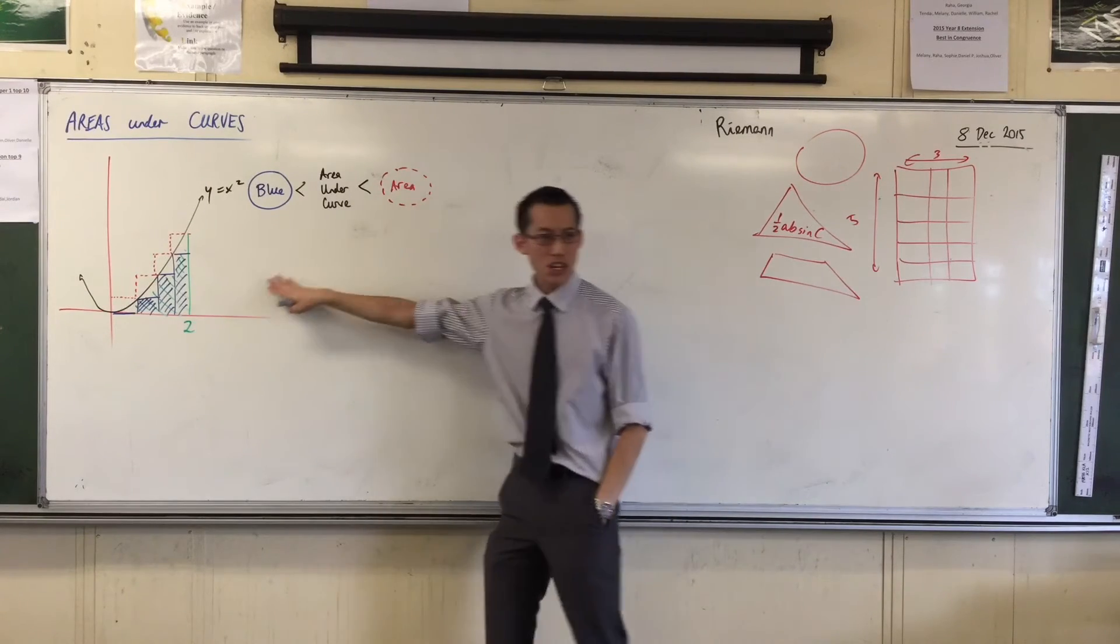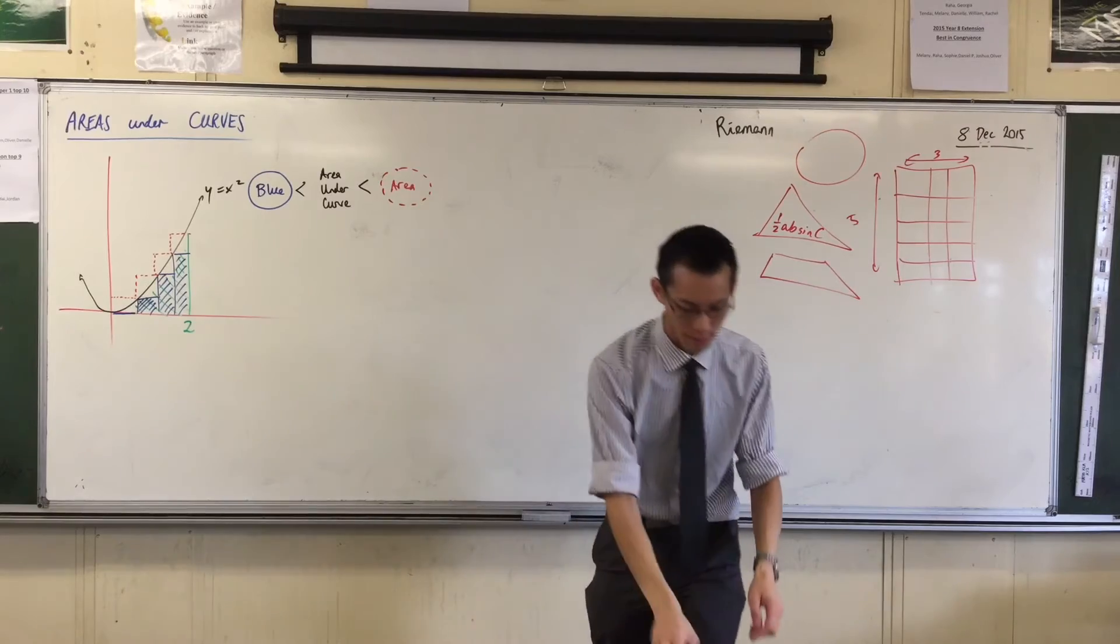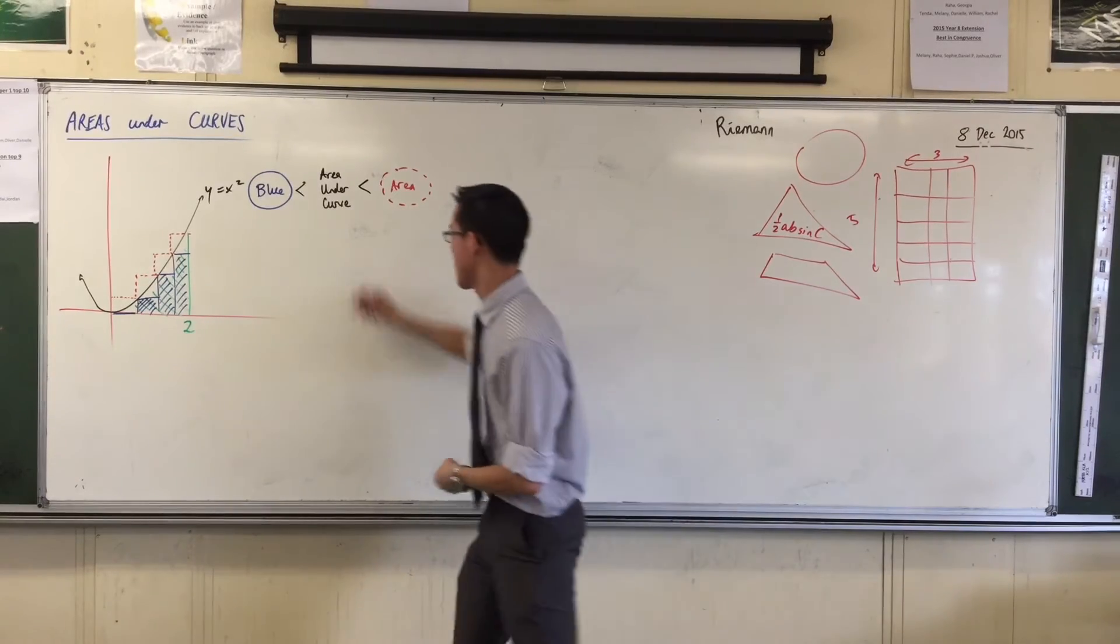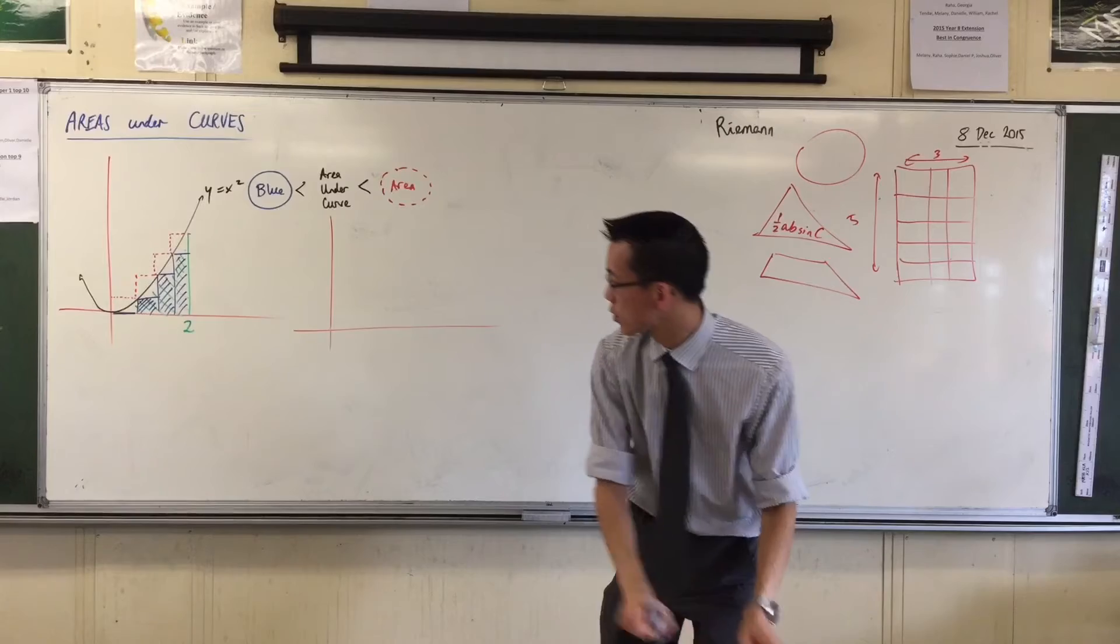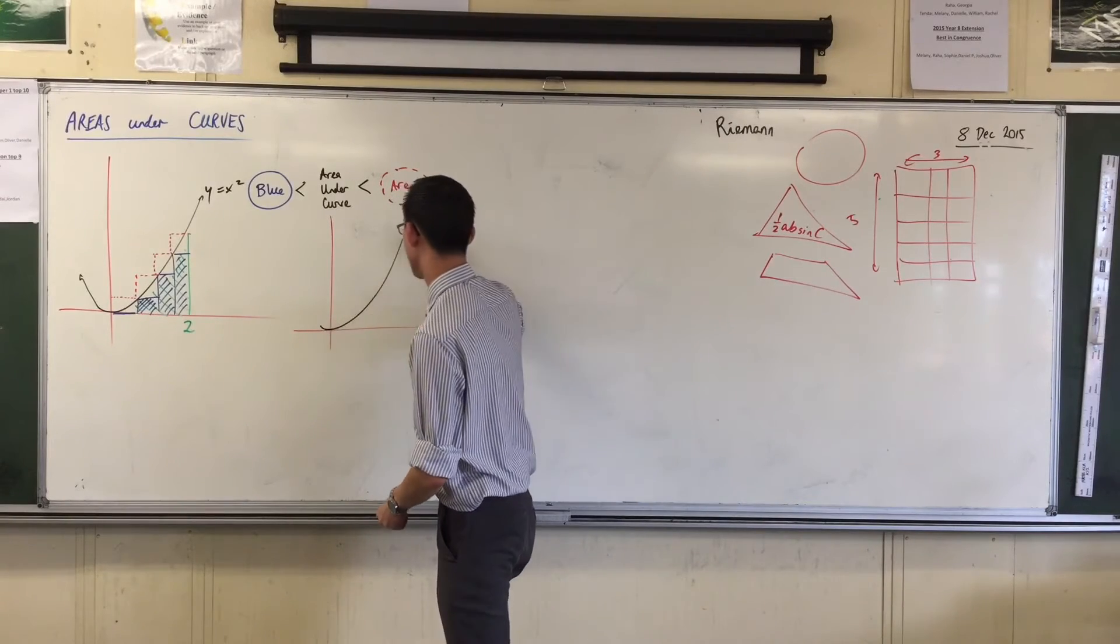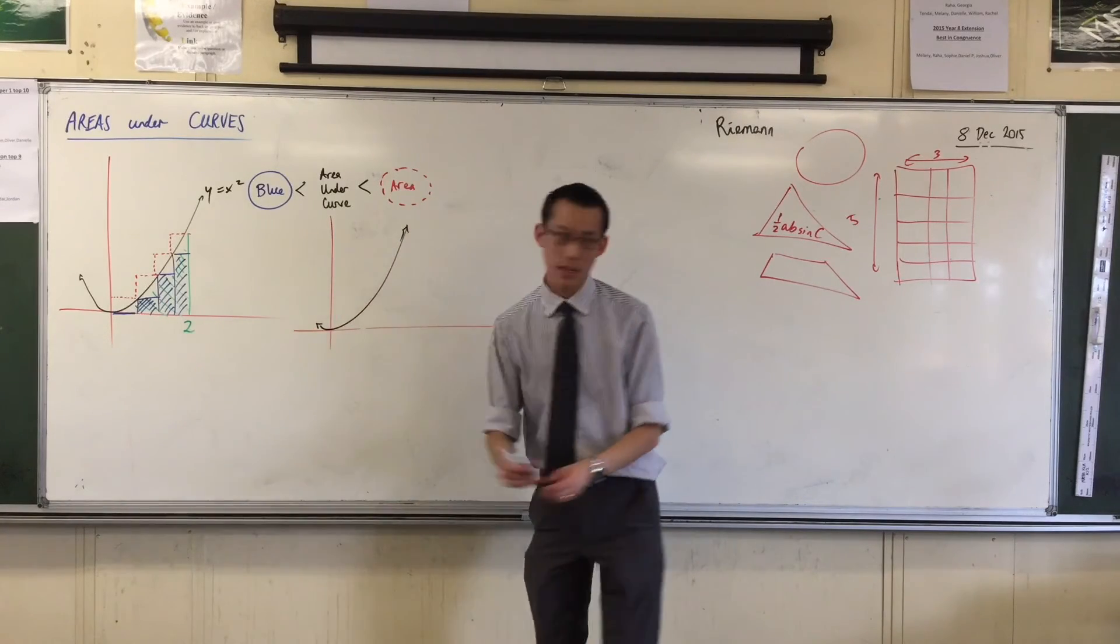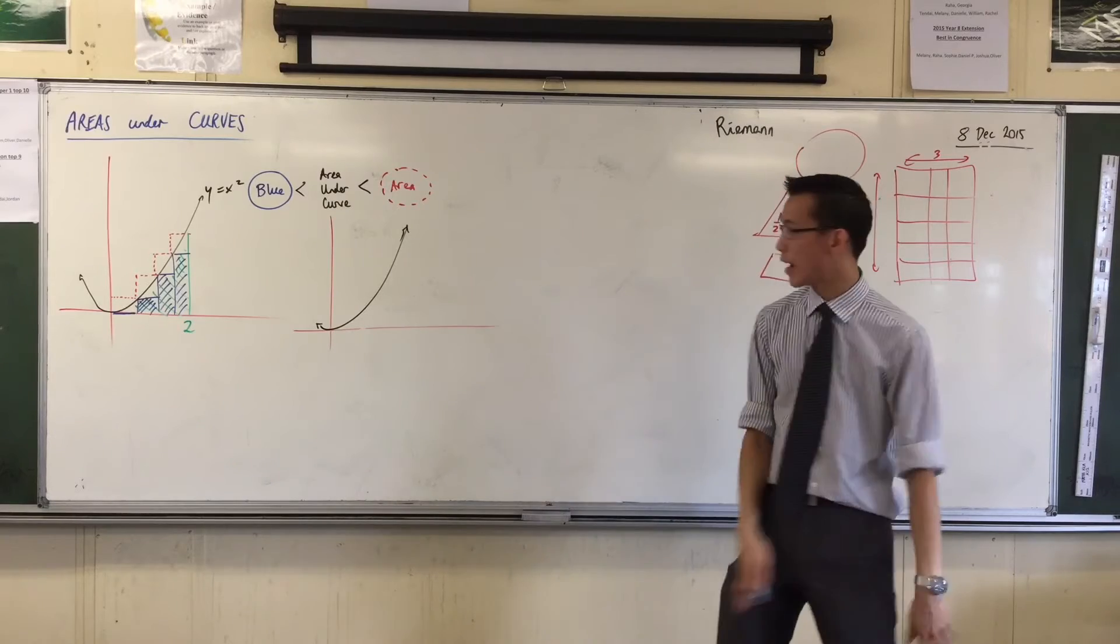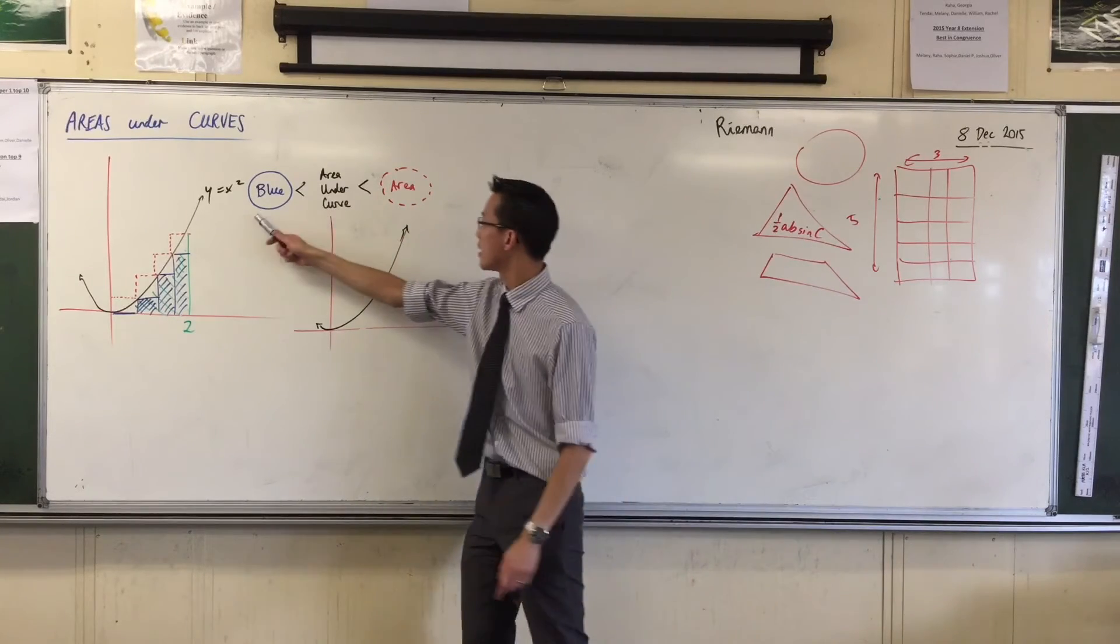If I can know that the area is between these two values, draw a new parabola over here next to this. Draw a new parabola, the same one, y equals x squared.